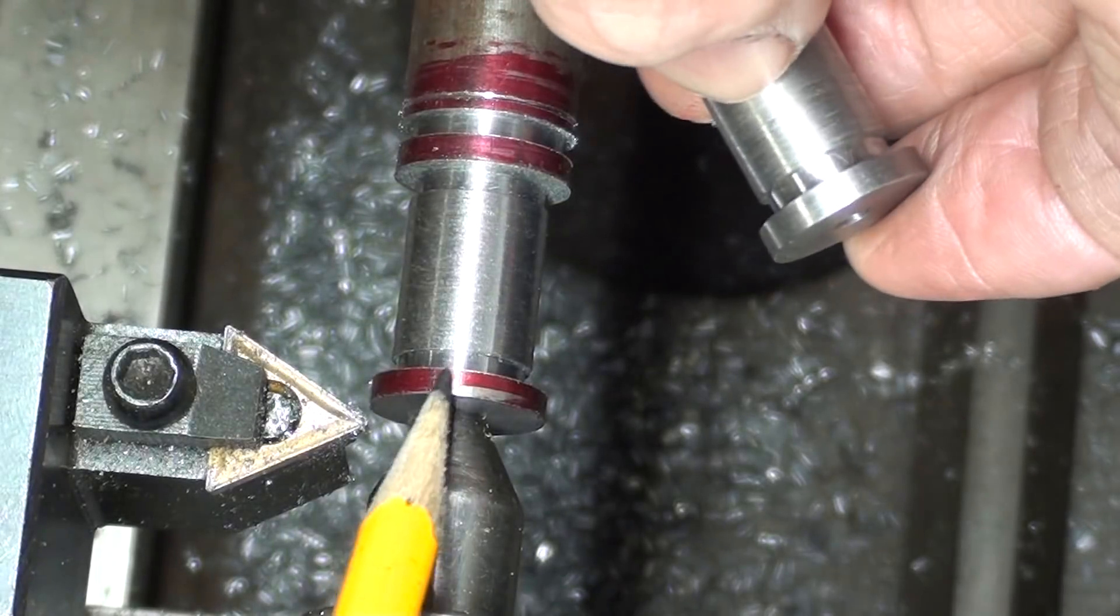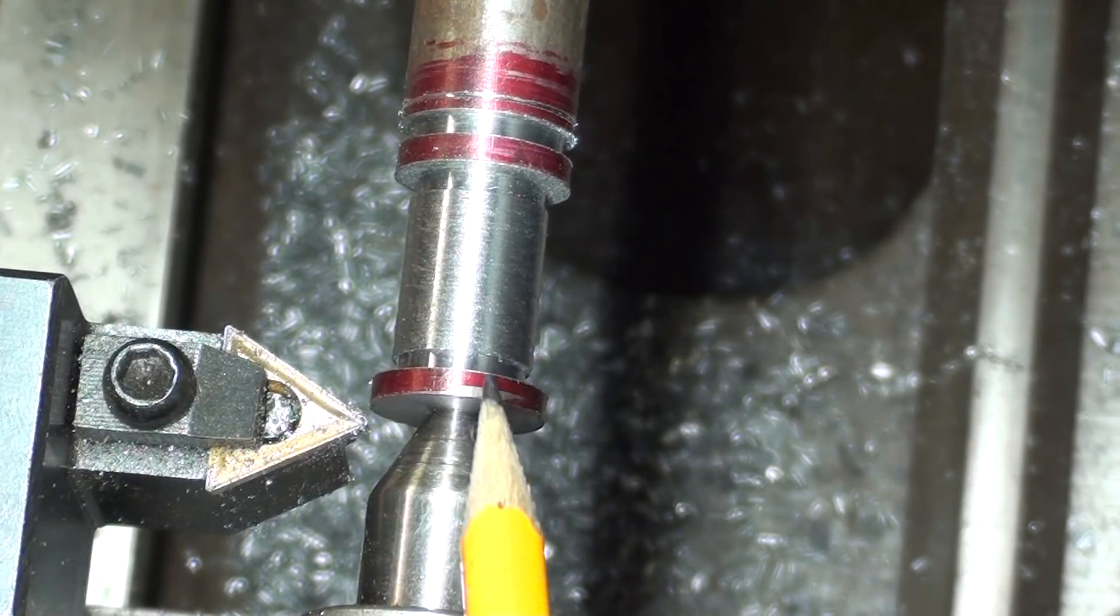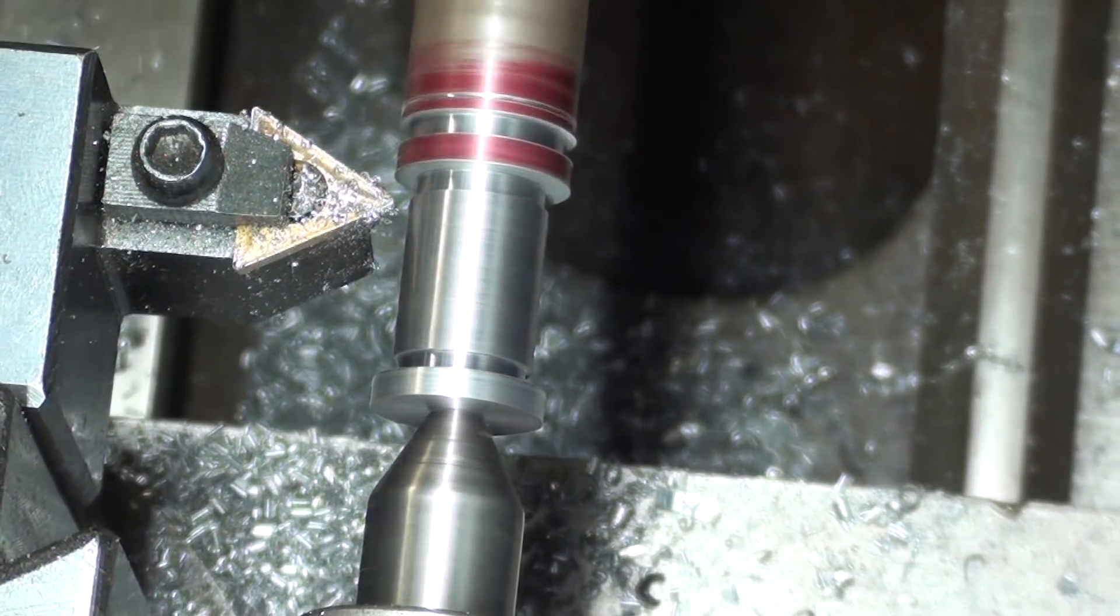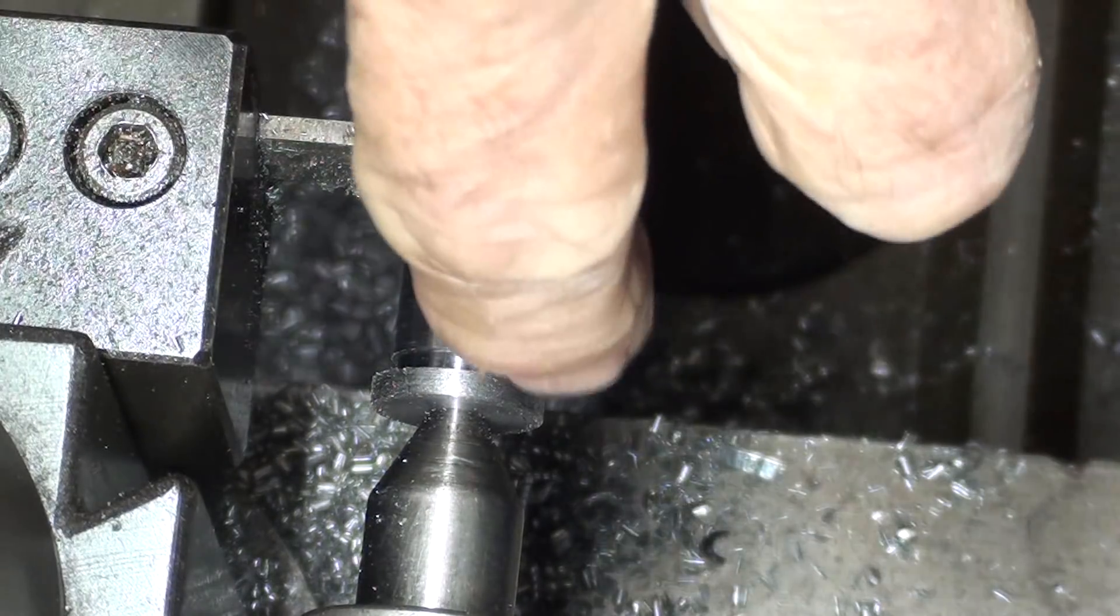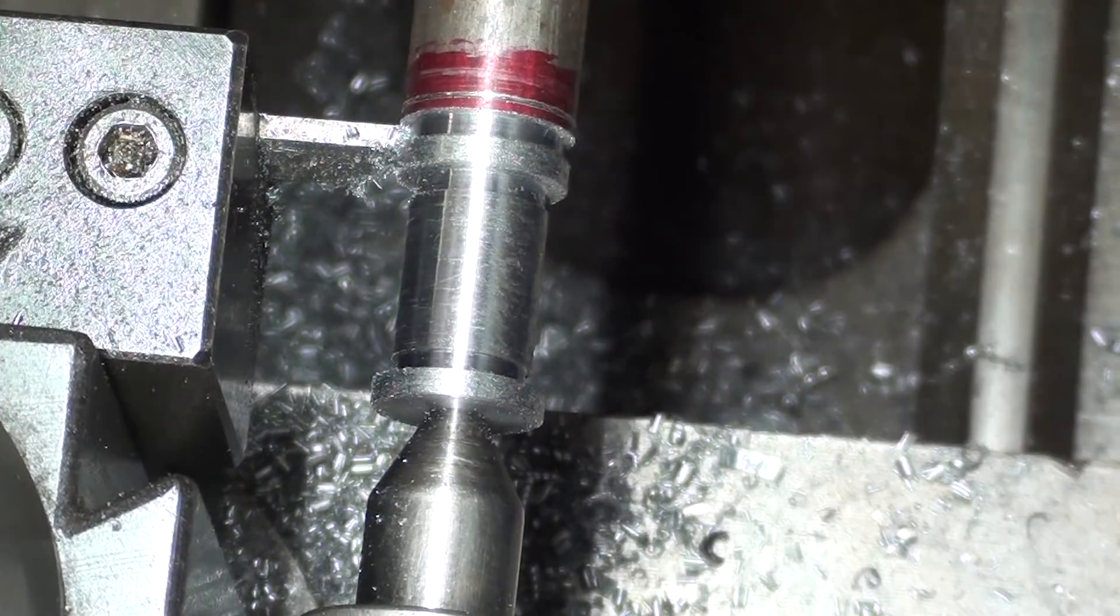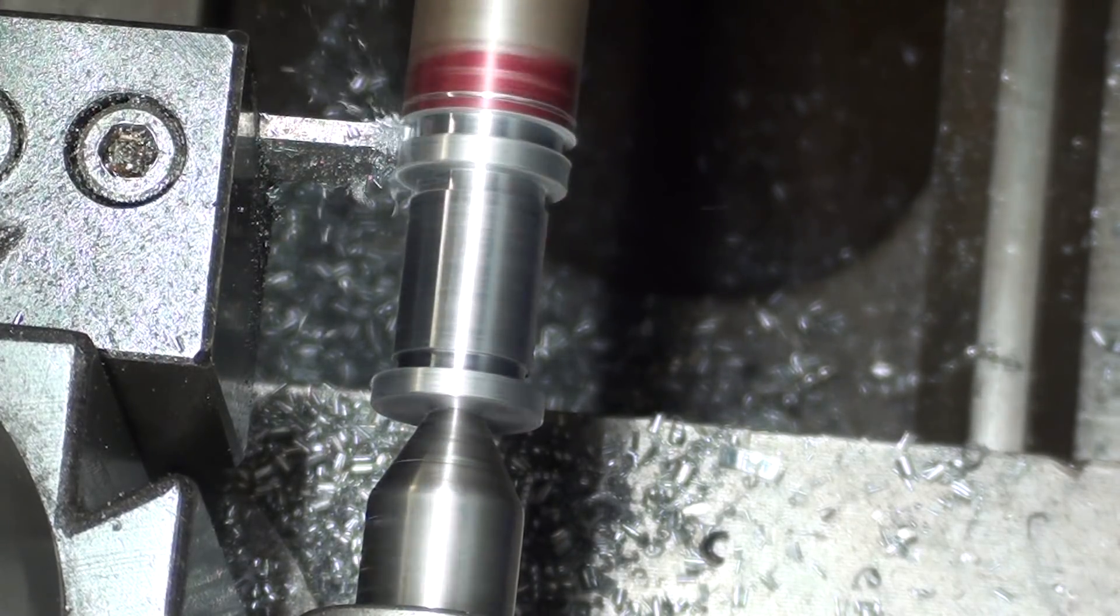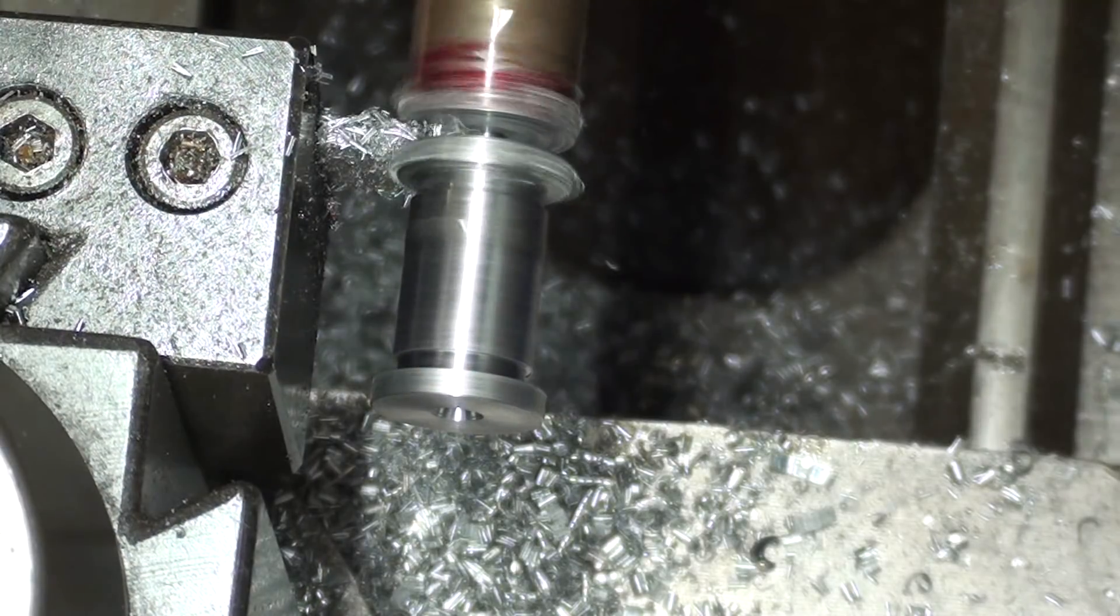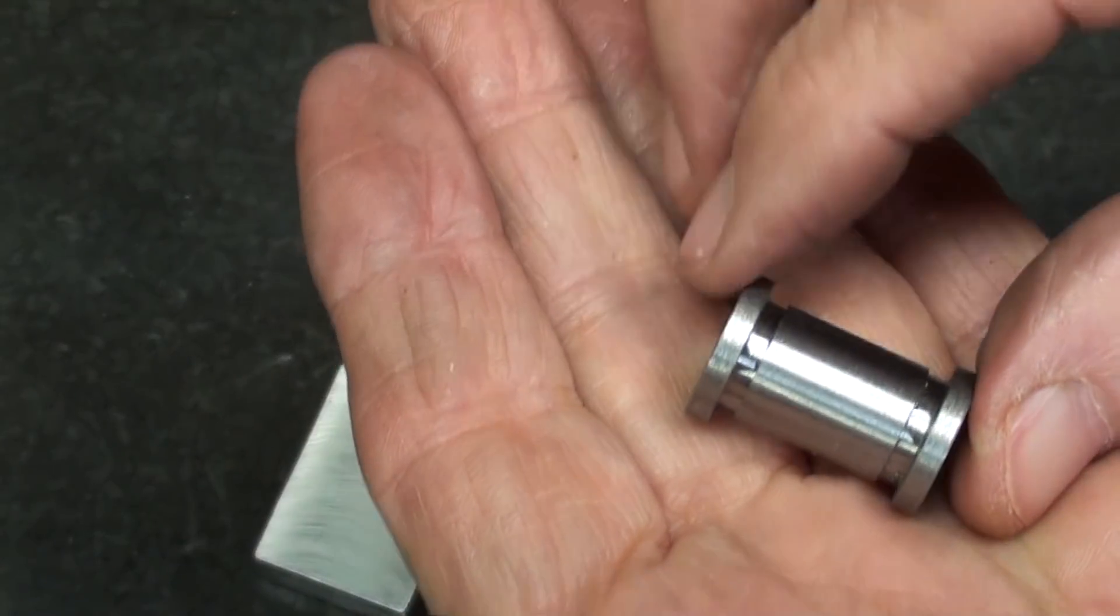The diameter here and here needs to be .610. Again, not critical. Just for clearance. And now I will cut it off. Now I still have a center in here, so I'll leave the center engaged until I get to almost the point where it drops off. But I do like to have it supported. Alright, there it is.